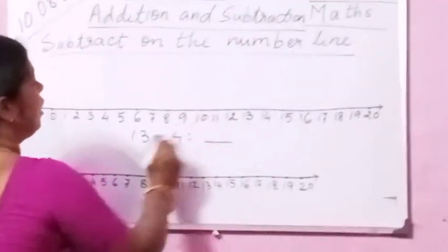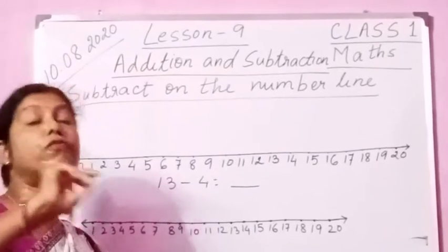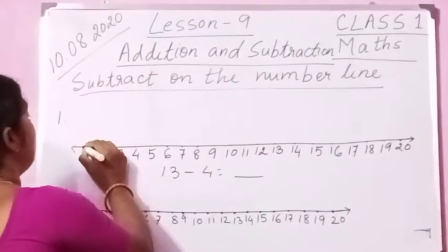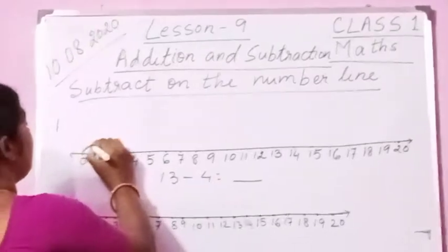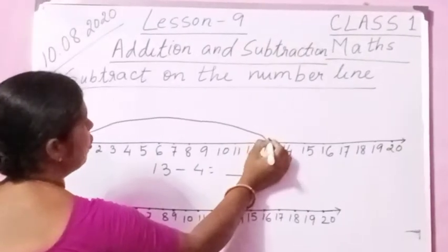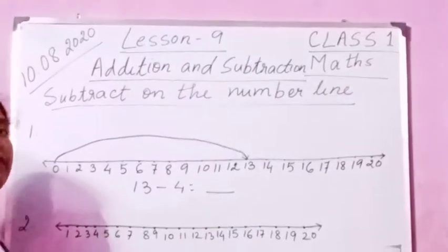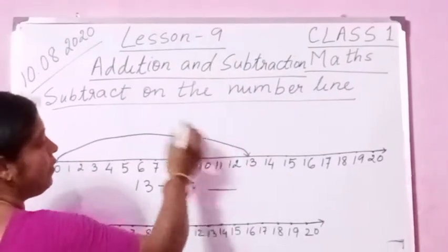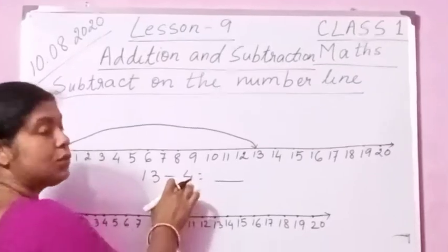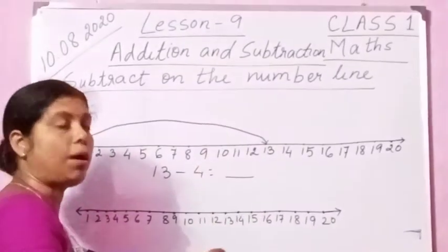Now let us jump to 13 because 13 is given here — 13 minus 4. We have to subtract 4 from 13. Keep in mind that we have to subtract 4 from 13. So let us jump to 13 from 0. See here, from 0 to 13 we are jumping. And from 13 we will come back. Minus 4 — it is here. So 4 numbers we are going to come back.